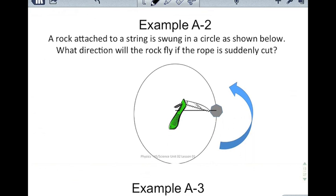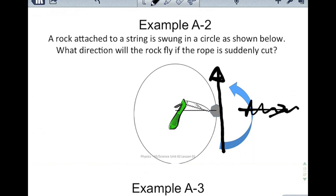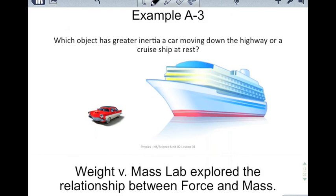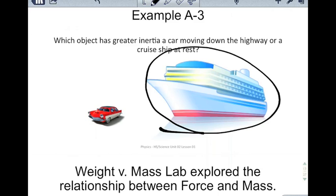A rock is attached to a string and swung in a circle. What direction will the rock fly if the rope is suddenly cut? The object is moving in a circular path, and at every single point the object moves in a circle, it's moving along a tangent line — that is the velocity at any given point, tangent to the circular path. When you cut the string, the force becomes zero. You should be able to determine the direction the rock will fly. Which has greater inertia — a car moving down the highway or a cruise ship at rest? You should be able to justify that answer with your notes.